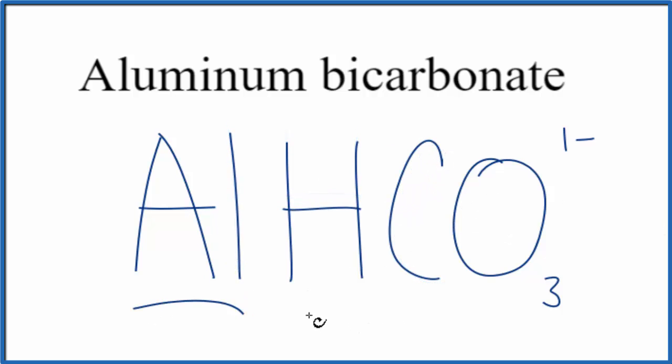So aluminum, that's a metal, and then we have a group of nonmetals here in our bicarbonate ion. Because we have a metal in this group of nonmetals, this is an ionic compound, we need to balance the charge.